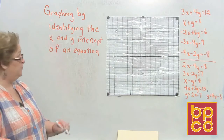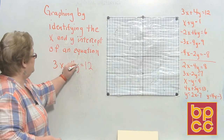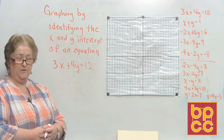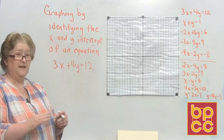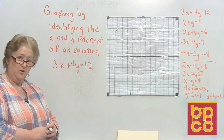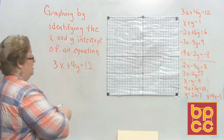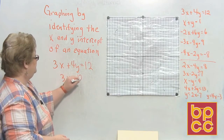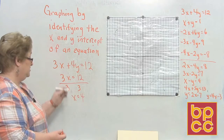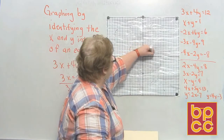Let's take a look at the first equation: 3x plus 4y equals 12. Instead of setting up in slope-intercept, we're going to find the x-intercept and the y-intercept using a little game called cover-cover. If it's in standard form, and this is, cover the y — or pretend the y is 0 — and you get 3x equals 12. Divide by 3, and x equals 4. So the line crosses the x-axis at 4, and I'll put a point right there.